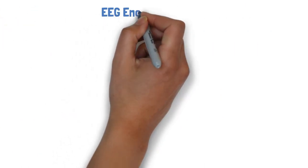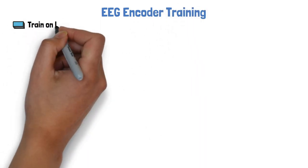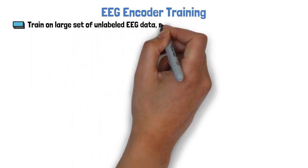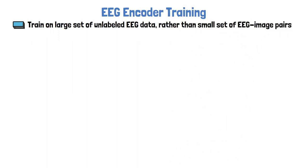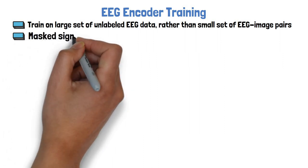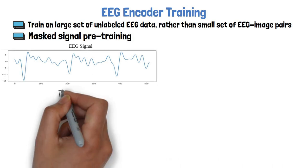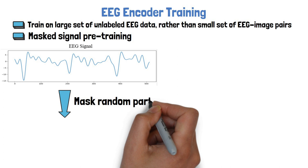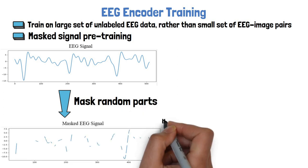In order to handle the first challenge of obtaining robust semantic representations from EEG signals, they propose to train the EEG signals encoder using large amounts of unlabeled EEG data, instead of only rare EEG-image pairs. They refer to the training method they choose as mask signal pretraining. The way it works is that given a sample of EEG signal, they randomly mask parts of the signal, so visually the masked signal would show many parts hidden.